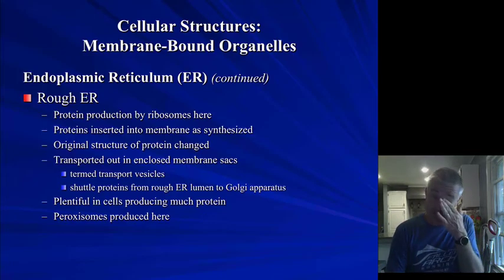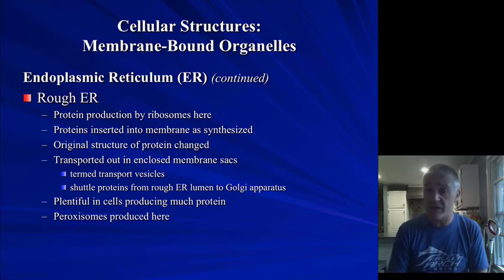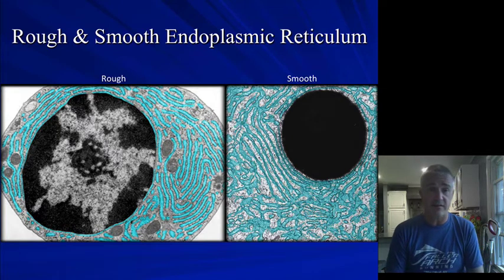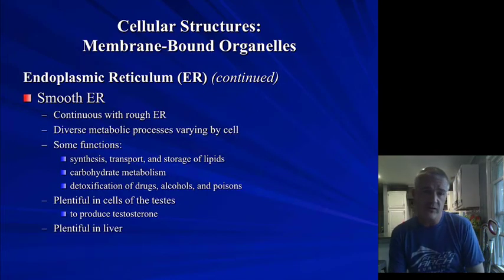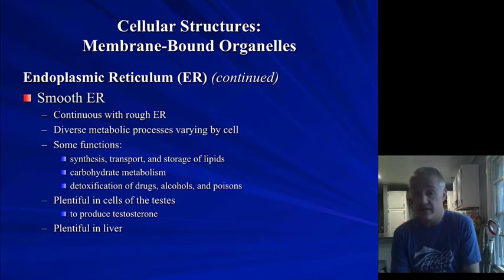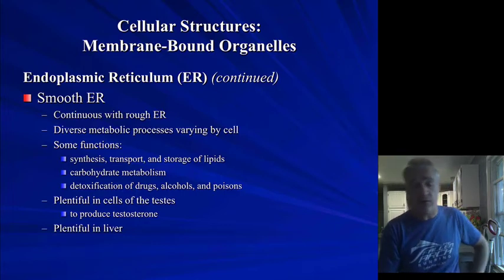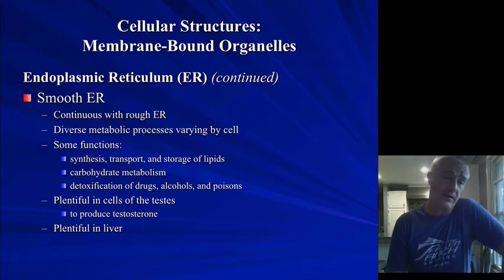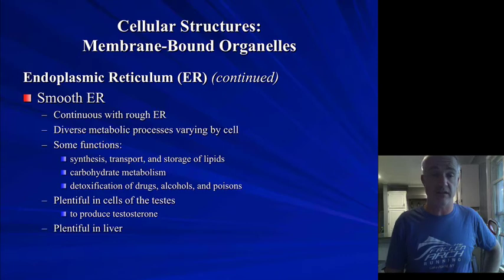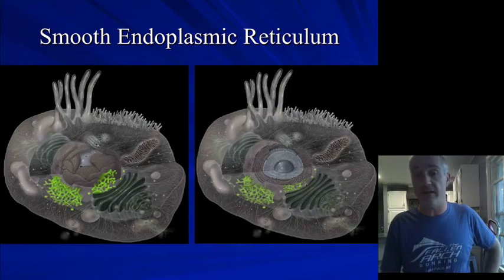The rough endoplasmic reticulum is involved in protein synthesis and targets proteins into vesicles, moving them to the Golgi or other areas. We also make peroxisomes here. The rough ER is generally close to the nucleus because it gets its messenger RNA from there. The smooth ER is generally close to the rough ER but is more involved in carbohydrate and lipid metabolism as well as drug detoxification. Cells that do a lot of lipid synthesis — like testosterone production in the testes — or organs that do a lot of detoxification, like hepatocytes in the liver, have a large amount of smooth ER.